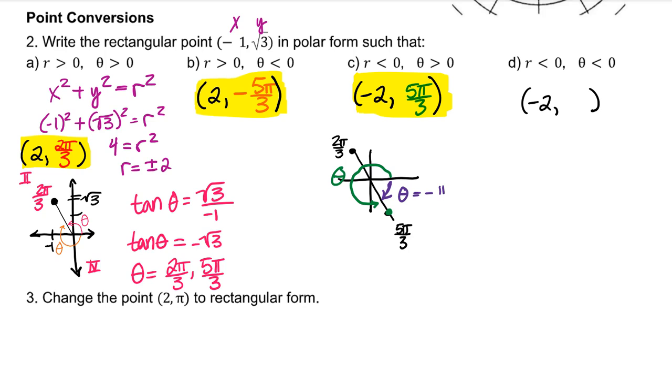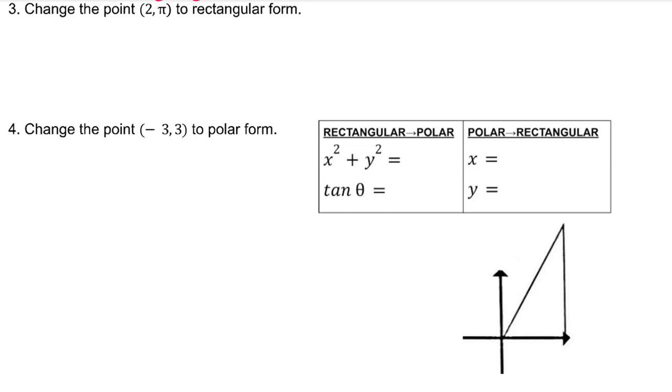What about if we're going to change a polar point into rectangular form? When we're doing conversions from rectangular to polar, it's helpful to use x squared plus y squared equals r squared. And to find theta, it's helpful that tangent theta is y over x. When we're going from polar to rectangular, x is equal to r cosine theta and y is equal to r sine theta. And this is r and this is theta. So in order to find x, I'll put r cosine theta.